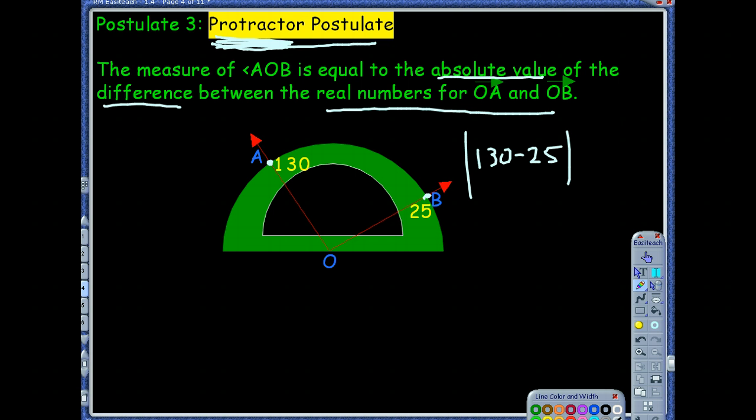Technically, I could have done 25 minus 130 because by taking that absolute value. Now, some of you are probably thinking, most of the time when you measure an angle, one of the rays, you usually want to line up with the protractor, so you don't have to do any subtracting because then you can just find the measure easily that way.